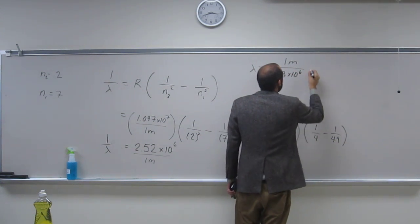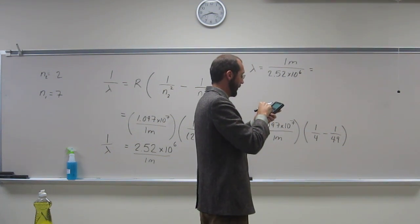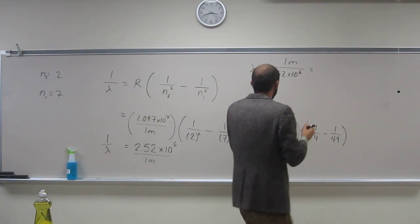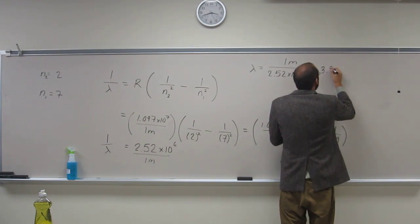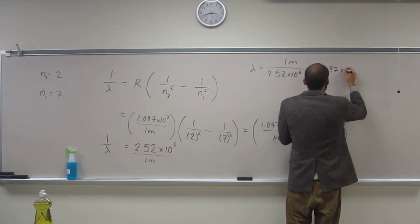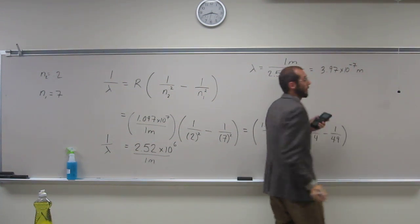So when I do that, just take 1 divided by the second answer on my calculator: 3.97 times 10 to the negative 7 meters. Is everybody cool there?